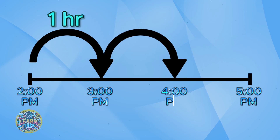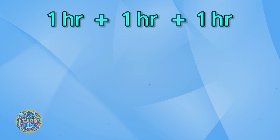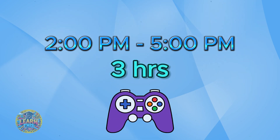Then go from 3 p.m. to 4 p.m., and then 4 p.m. to 5 p.m. Don't forget to include a.m. and p.m. with each time. Now we just add up the hours, so the answer here is 3 hours.